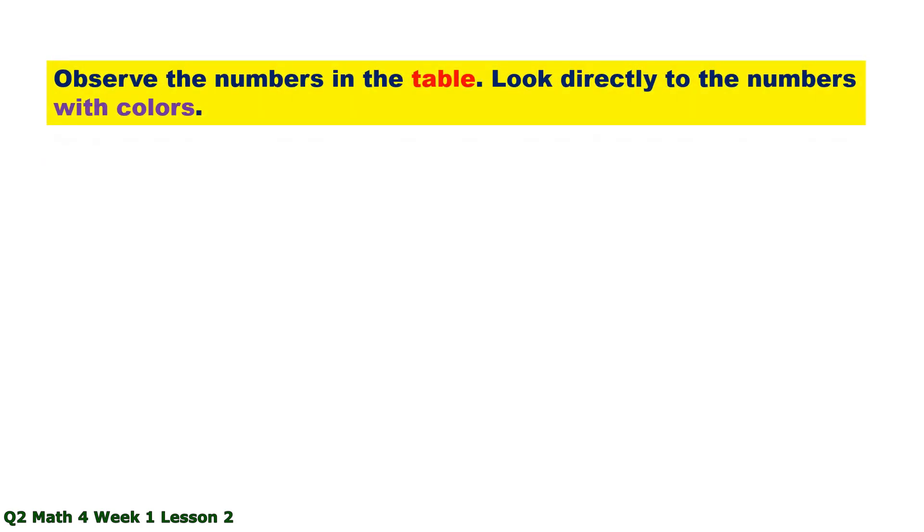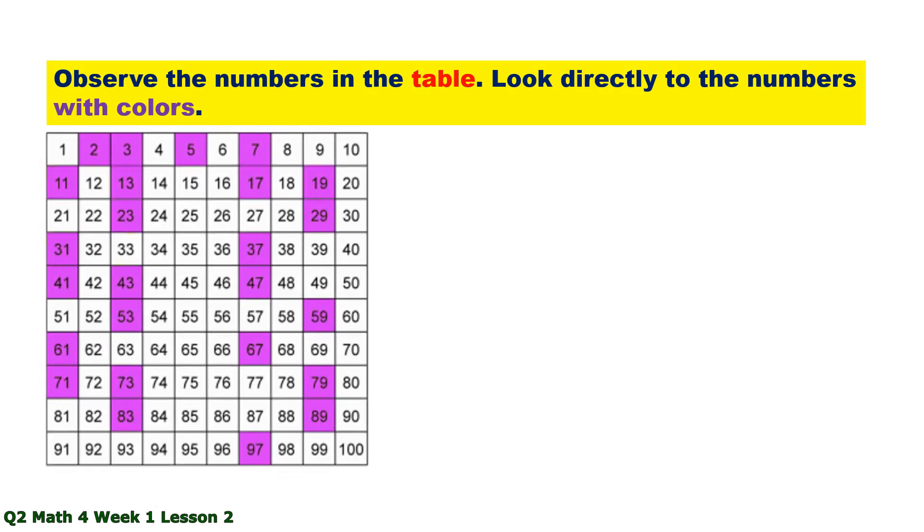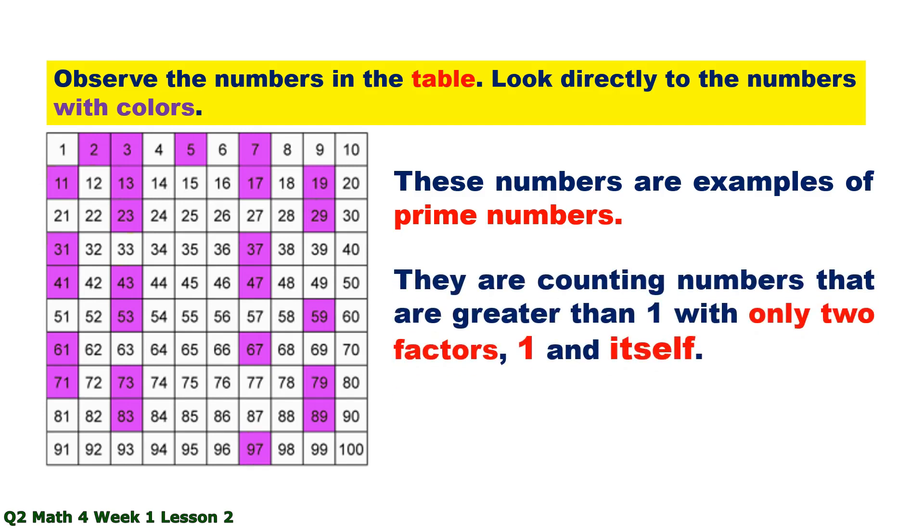Observe the numbers in the table. Look directly to the numbers with colors. These numbers are examples of prime numbers. They are counting numbers that are greater than 1 with only two factors, 1 and itself.